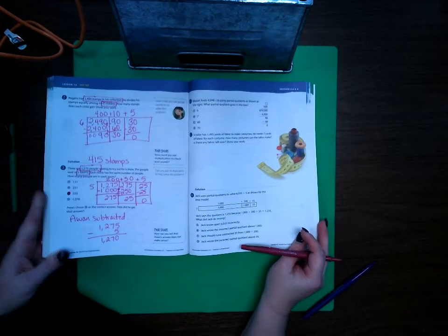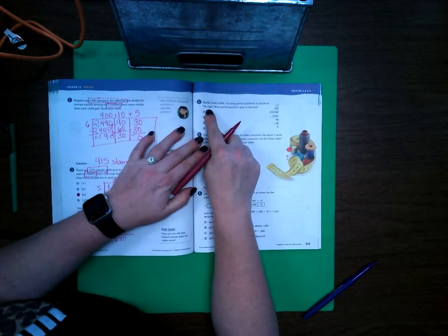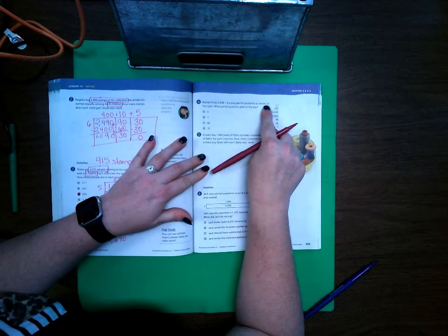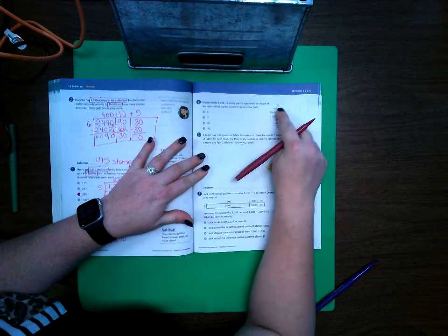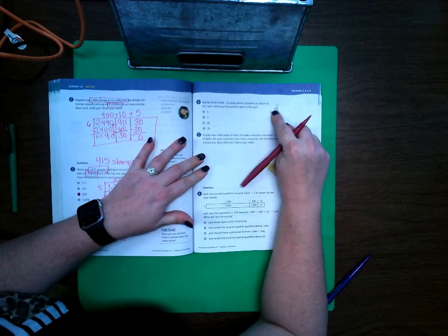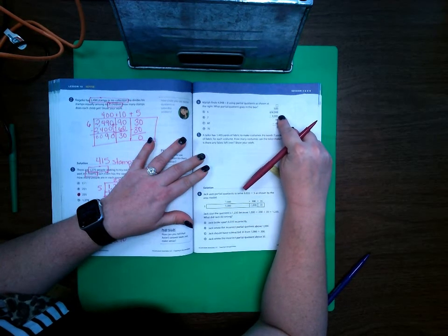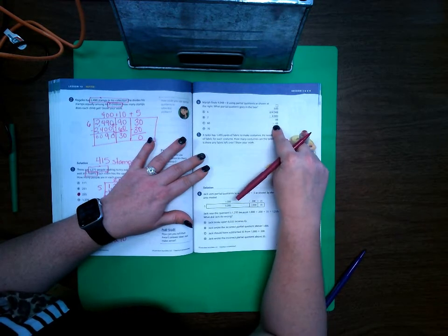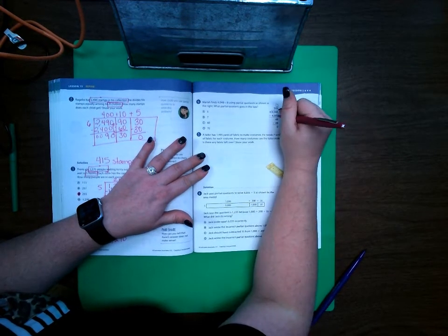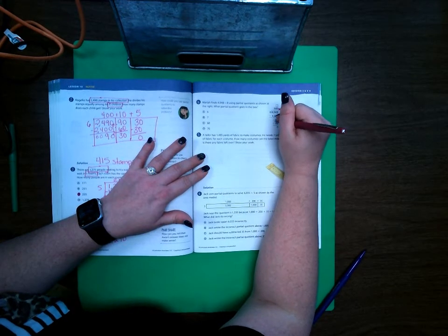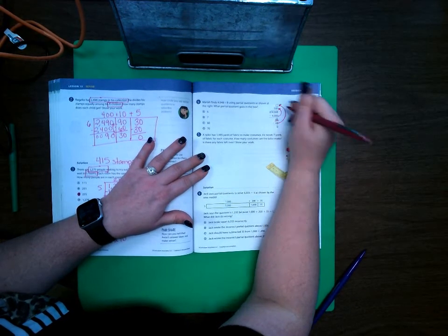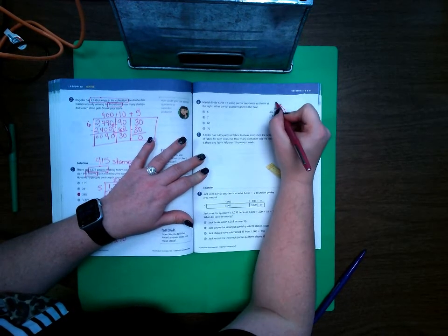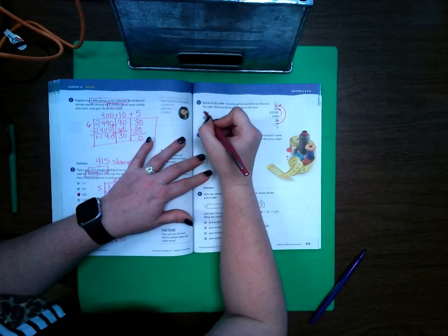We're at the top on number 4. Mariah finds 4,048 divided by 8 using partial quotients as shown to the right. What partial quotient goes in the box? 8 times 500 is 4,000, which leaves 48. 8 times what is 48? Because this one is multiplied by that. 8 times 6 is 48. So the answer is A.